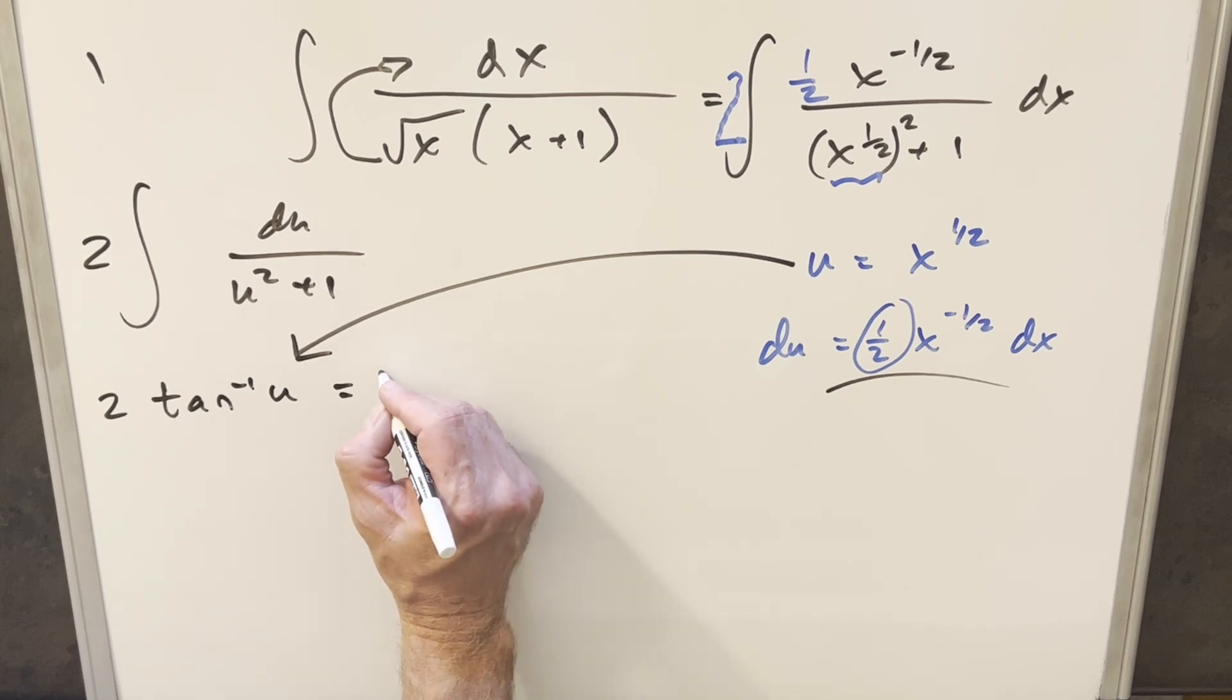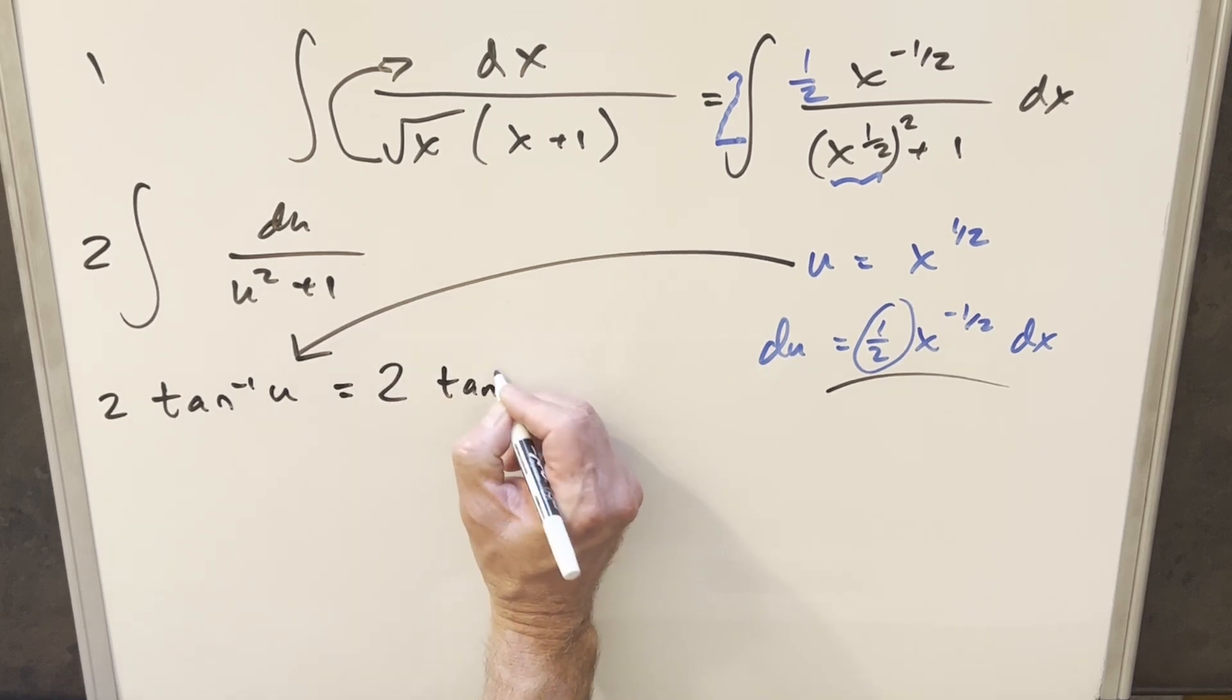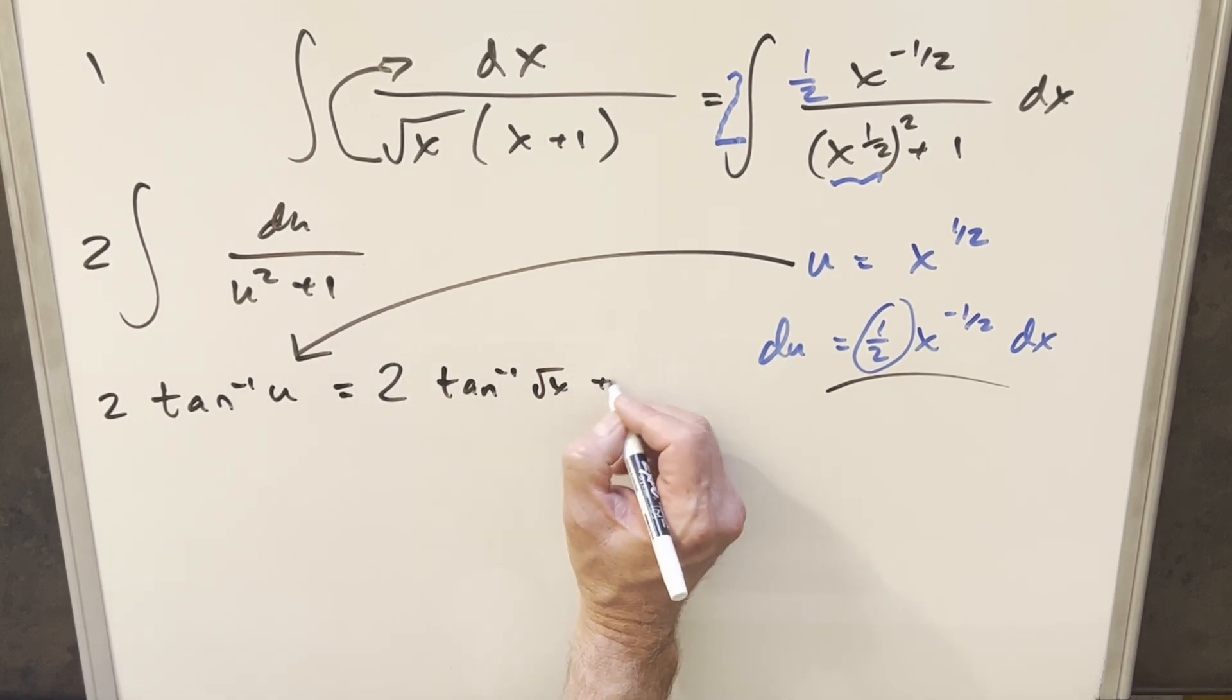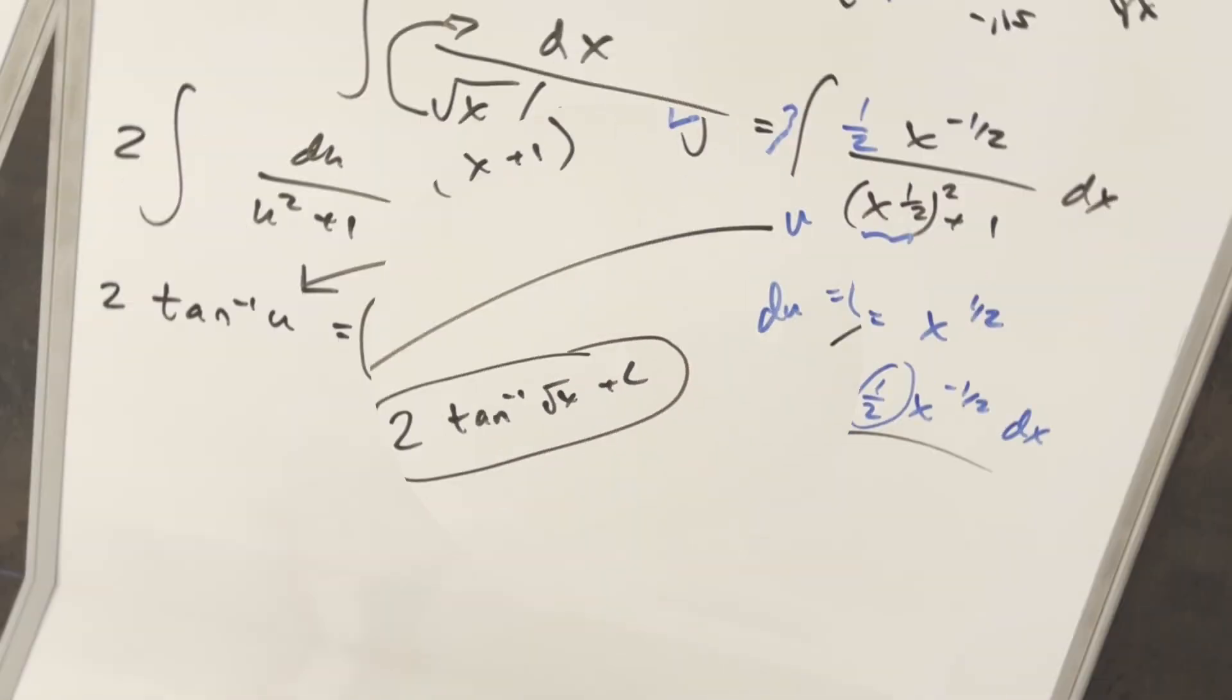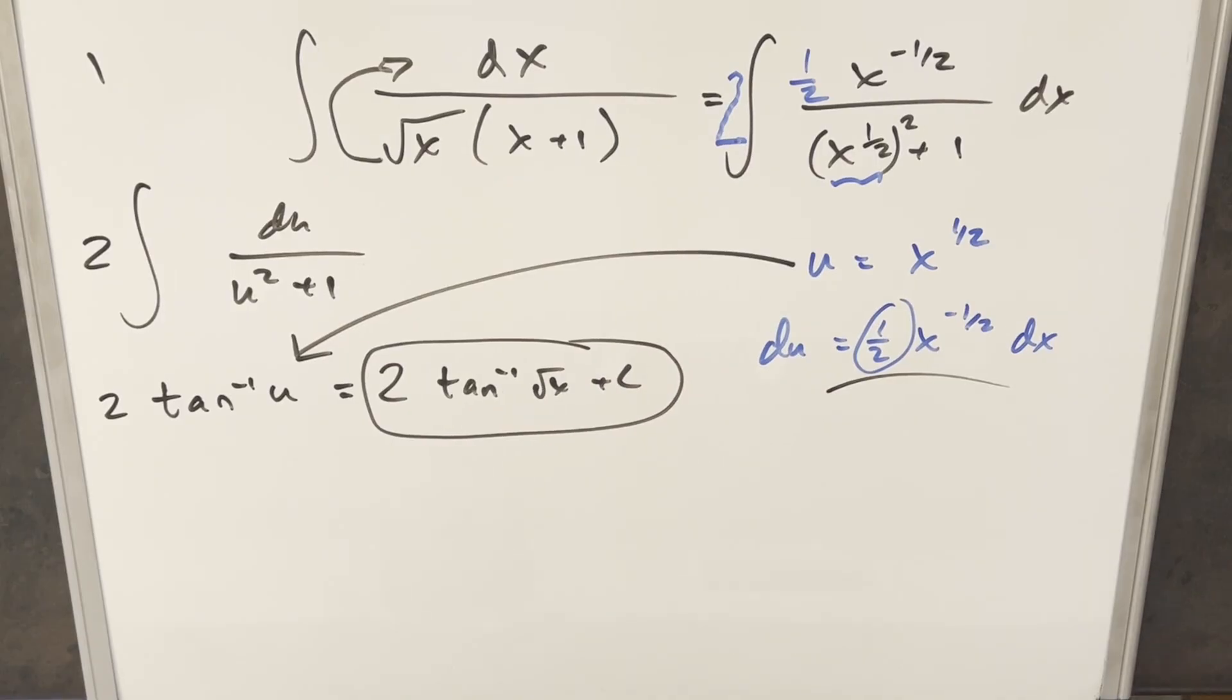back substitute in order to finish it off. So for my final solution, we just get two arctan square root x plus c, and that's it. Okay, there you have it, really quick one from Vienna 2024. Thanks everyone for watching, have a good day.